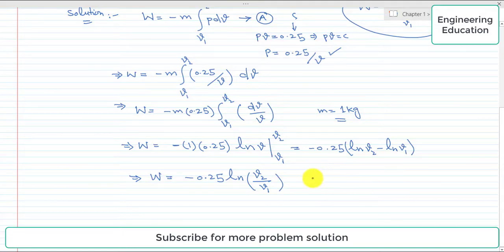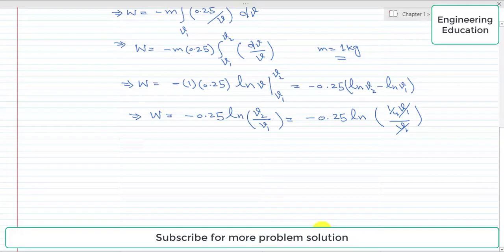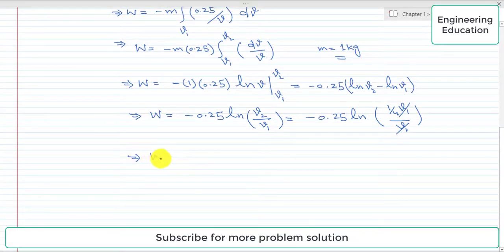Further, we have given that V2 is 1 by 4 times of V1. So we can write that natural log of 1 by 4 V1 by V1. This V1 will cancel with each other and we will get W equals minus 0.25 natural log of 1 by 4 or 0.25.